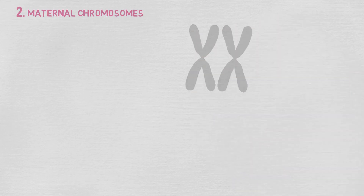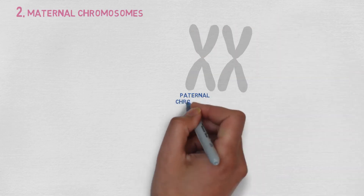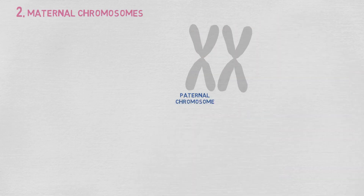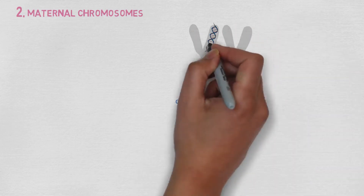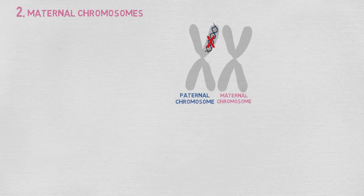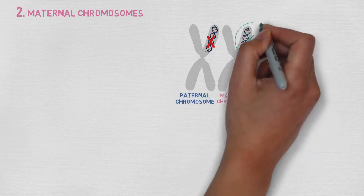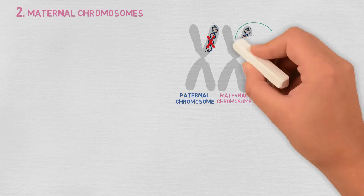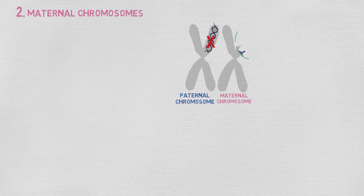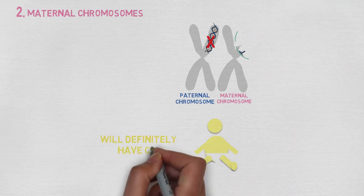Chromosomes are thread-like structures which carry our genetic information. Unfortunately, in this second event, the part of the mother's chromosome which would normally compensate for the dad's affected region is lost. This means that the child will definitely have CHI.